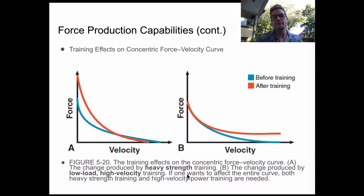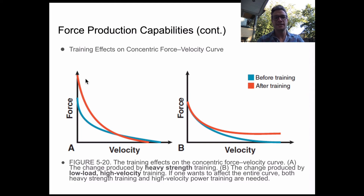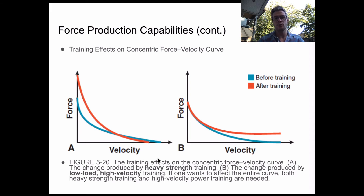What practically does this have for us if we're trying to generate our own training programs? Well, if we consider that ideally we're going to have a greater amount of force at both a lower speed and a higher speed, this information tells us we need to include both heavy strength training as well as low load, high velocity components if we want our athletes or ourselves to produce a greater amount of force throughout a range of velocities.